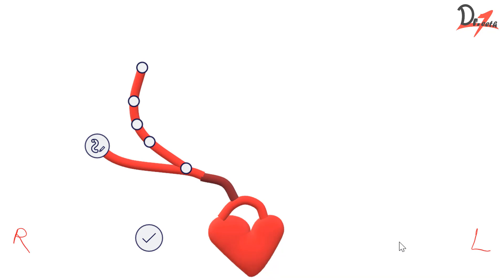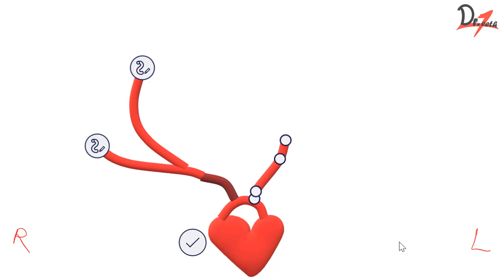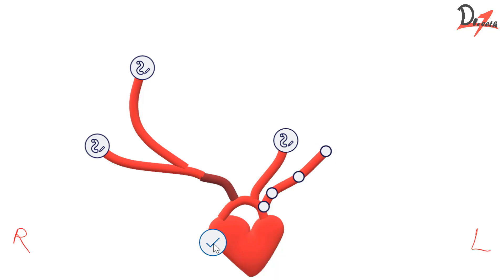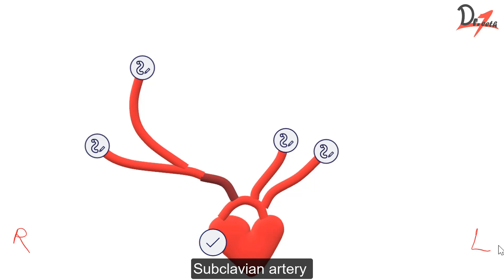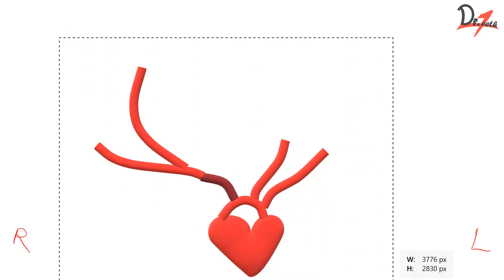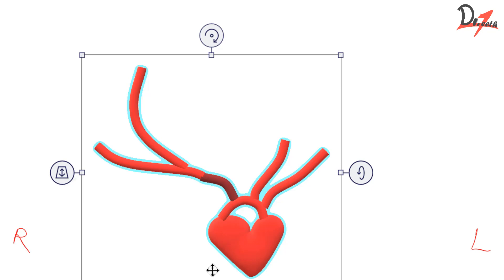Now, on the left side, we can see that the left common carotid artery arises directly from the arch of aorta. Also, we have the subclavian artery arising directly from the arch of aorta. So let us revise: we have the arch of aorta, then the brachiocephalic trunk, then the subclavian artery and the common carotid artery on the right-hand side. While on the left-hand side, we have the subclavian artery and the common carotid artery arising directly from the arch of aorta.